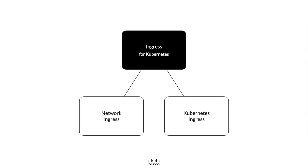The first topic of this presentation will discuss network Ingress, the admission of traffic. However, as Kubernetes does not specify how to implement network Ingress, leaving the implementation up to the operator of a Kubernetes cluster, we will discuss only the what, not the how. The second topic will discuss Kubernetes Ingress, the routing of traffic. We will discuss both the what and the how.